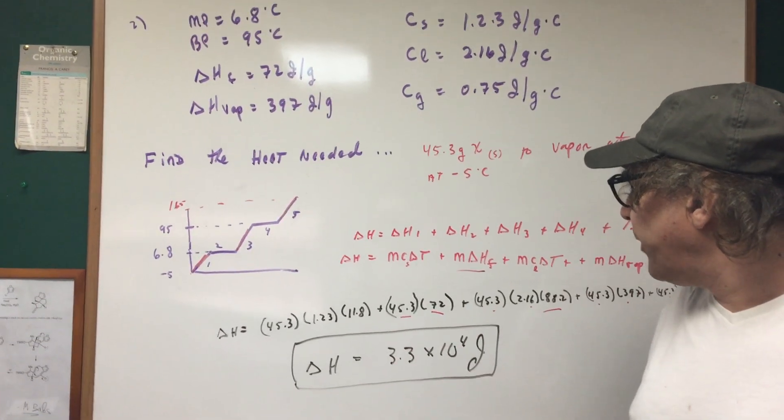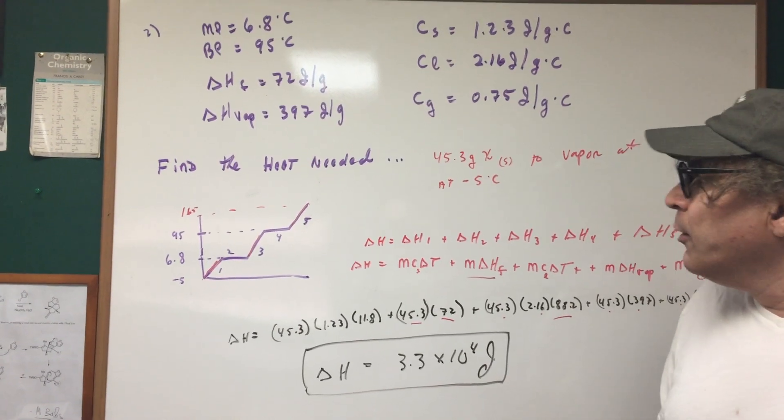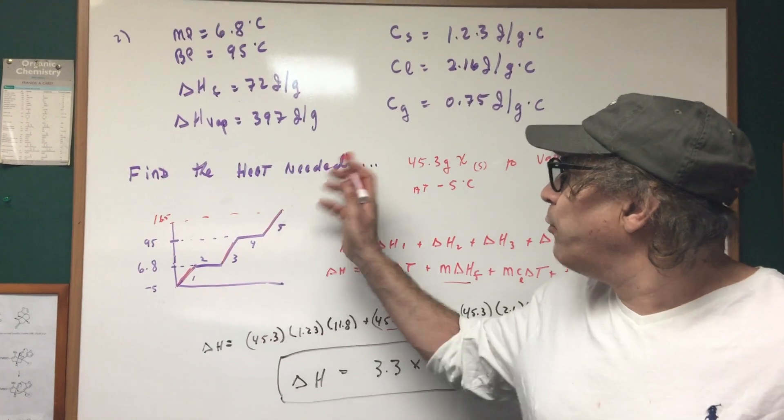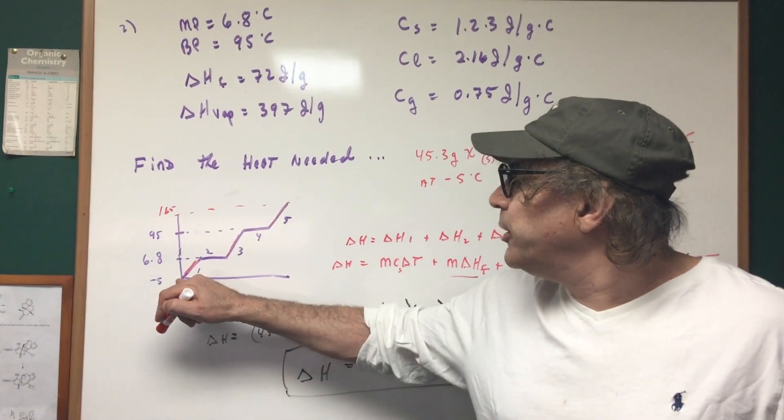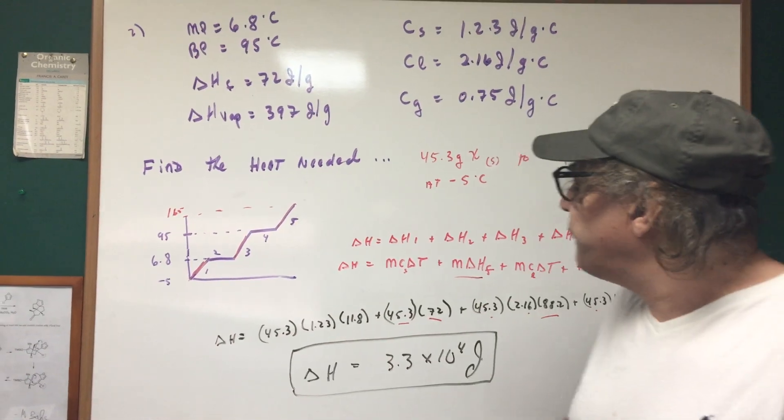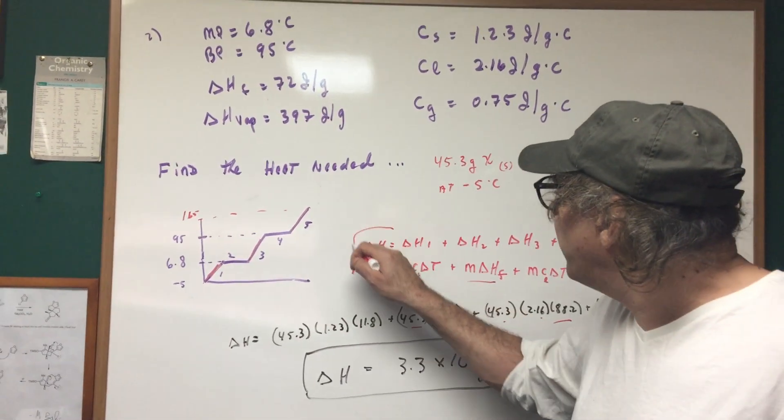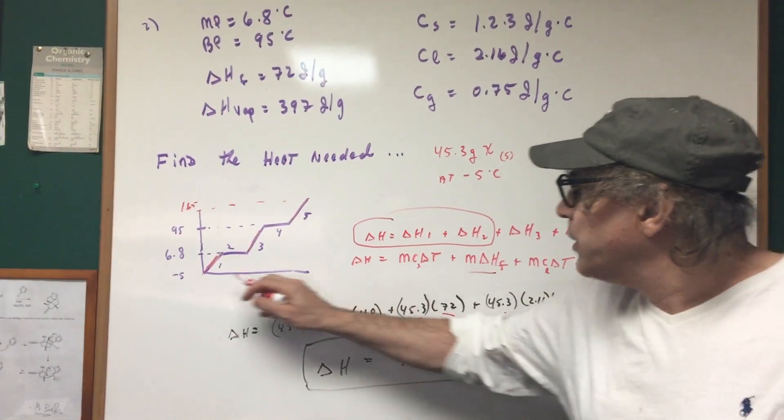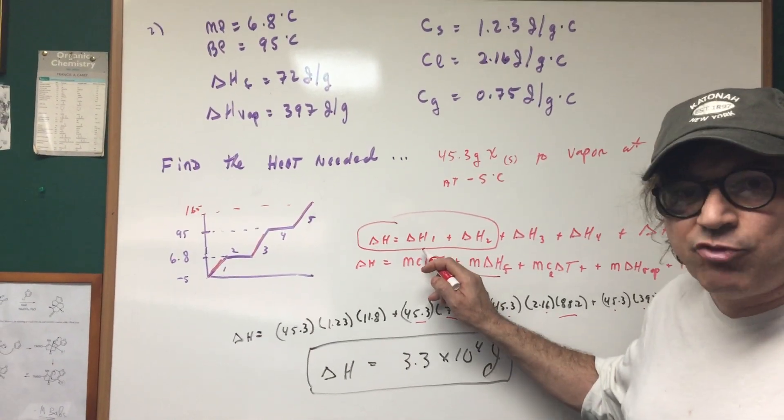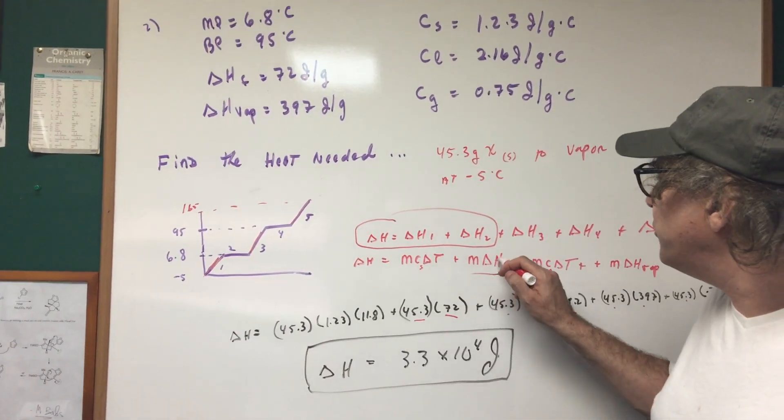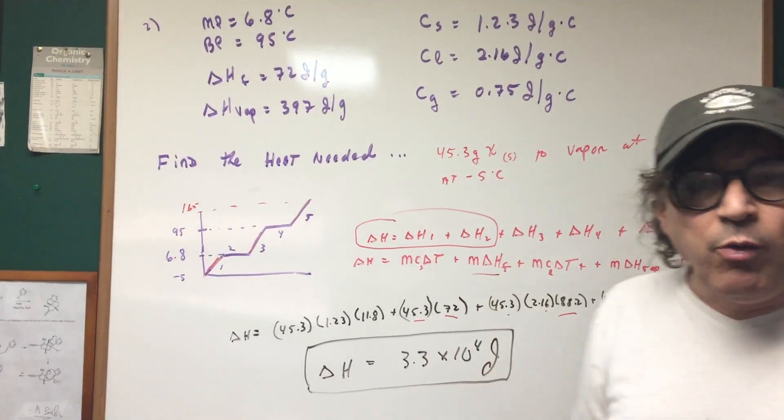What if in this example or on the DAT I said to you I want you to find the heat but you're gonna go from negative five and I want you to melt it all. So if you wanted to melt it all, all you would have done was just use these two equations. You would have first used the heat of delta H1 to bring it up to the melting point and then you would have just used the heat of fusion.